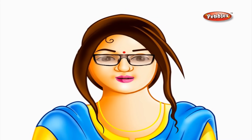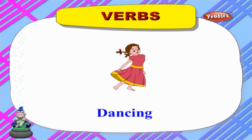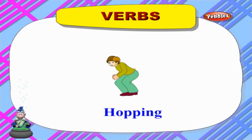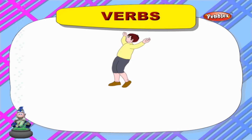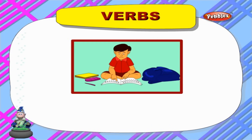Verbs are words that tell us what a person, animal, or thing is doing. They are called action words or doing words. Let us see some examples: swimming, dancing, writing, talking, hopping, sleeping, singing, jumping, running, playing, reading.